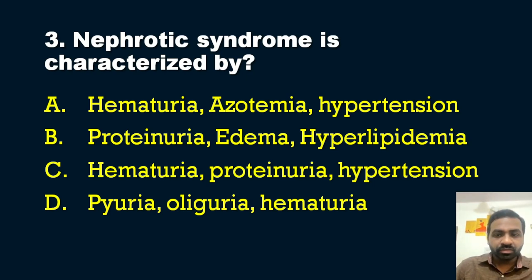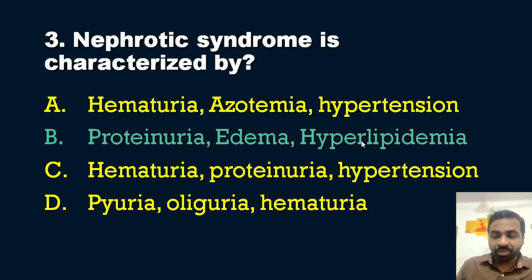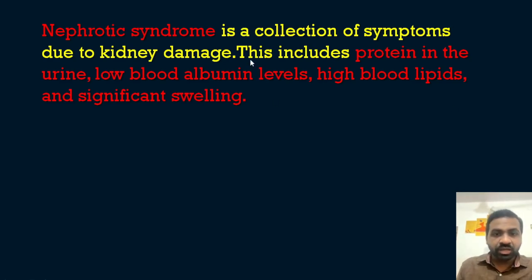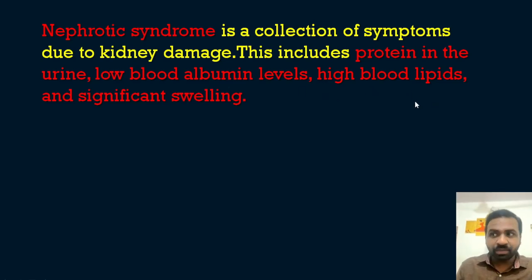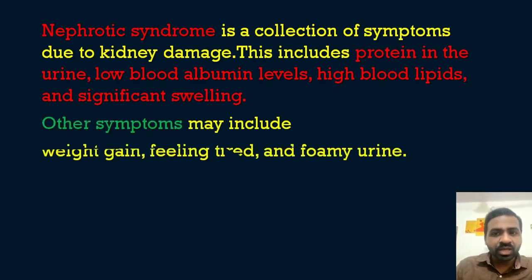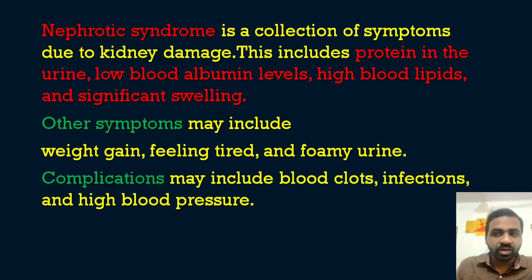The answer is option B — proteinuria, edema, and hyperlipidemia. Proteinuria means presence of protein or albumin in the urine. Nephrotic syndrome is a collection of symptoms due to kidney damage, including protein in urine, low blood albumin (since albumin is lost in urine), high blood lipid levels, and significant swelling (edema). Other features include weight gain, fatigue, and foamy urine.